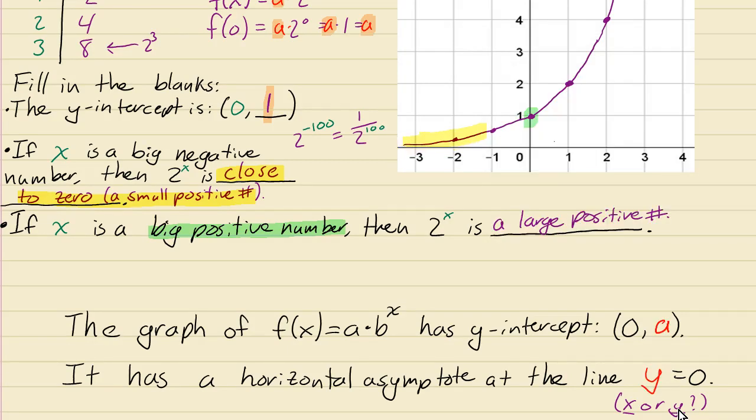Here's these answers. The graph of f(x) equals a times b to the x has a y-intercept at zero, a. That's what we were talking about here. And this was the example of the y-intercept there where the value of a was one. And the horizontal asymptote is this line here is what we're talking about. And is that the line x equals zero or y equals zero? Well, let's see if you have a point on here. This is the point one, zero.